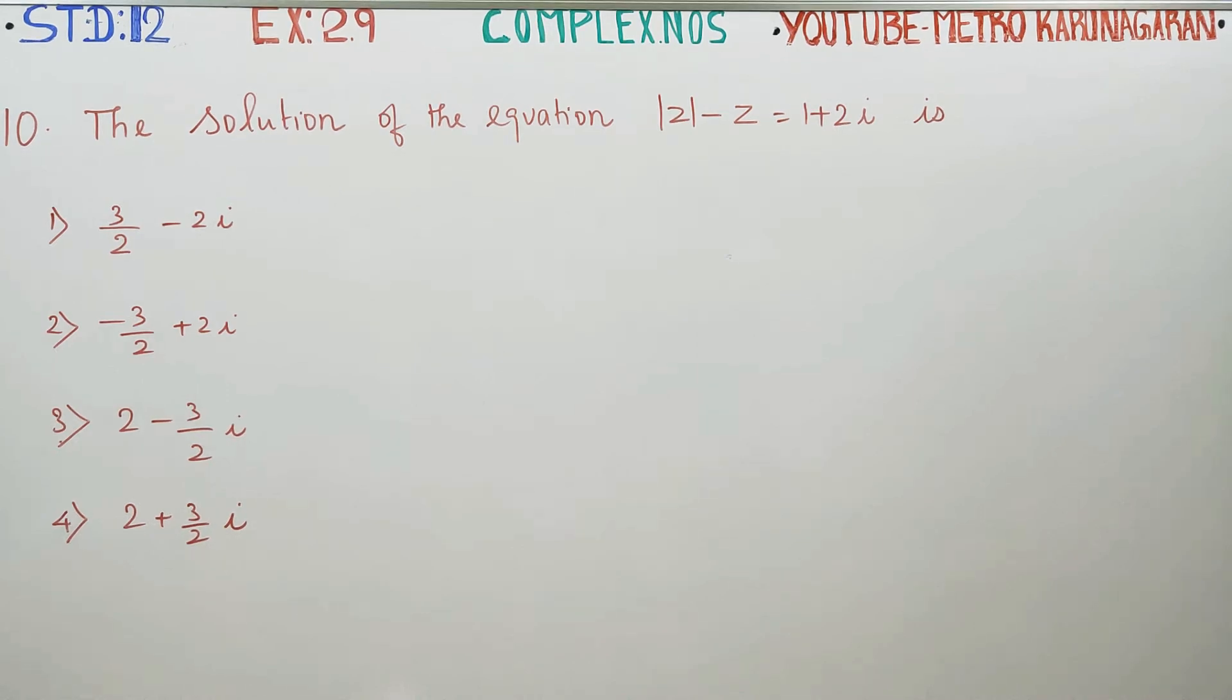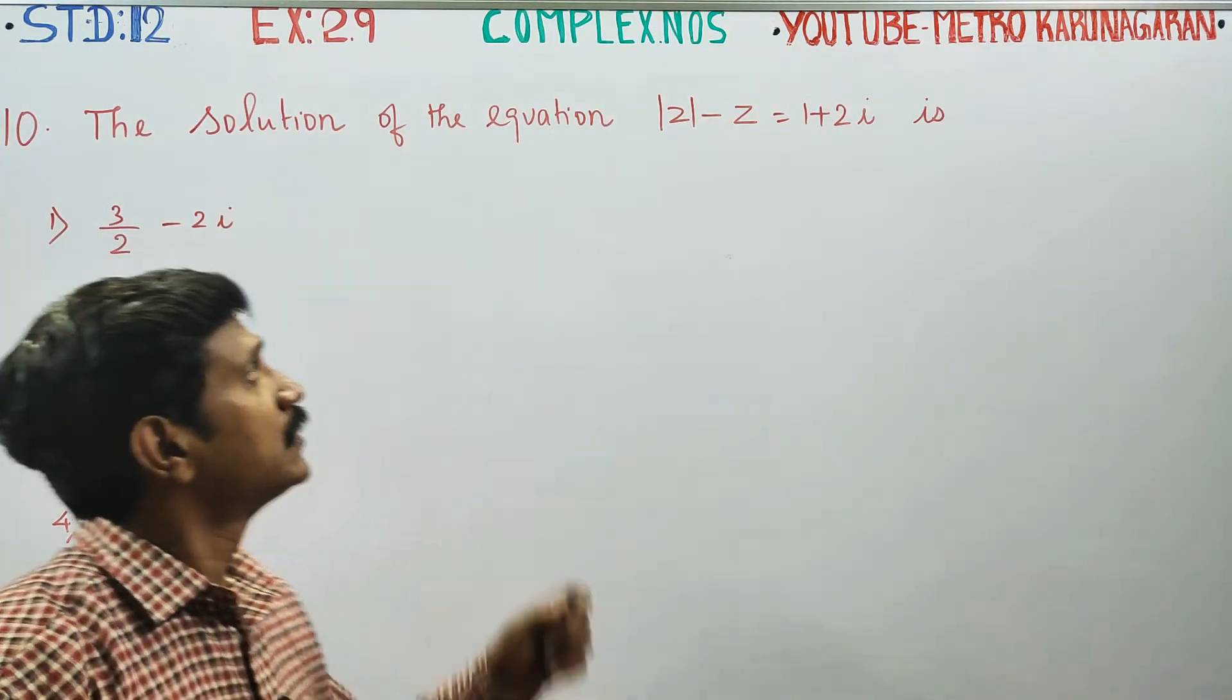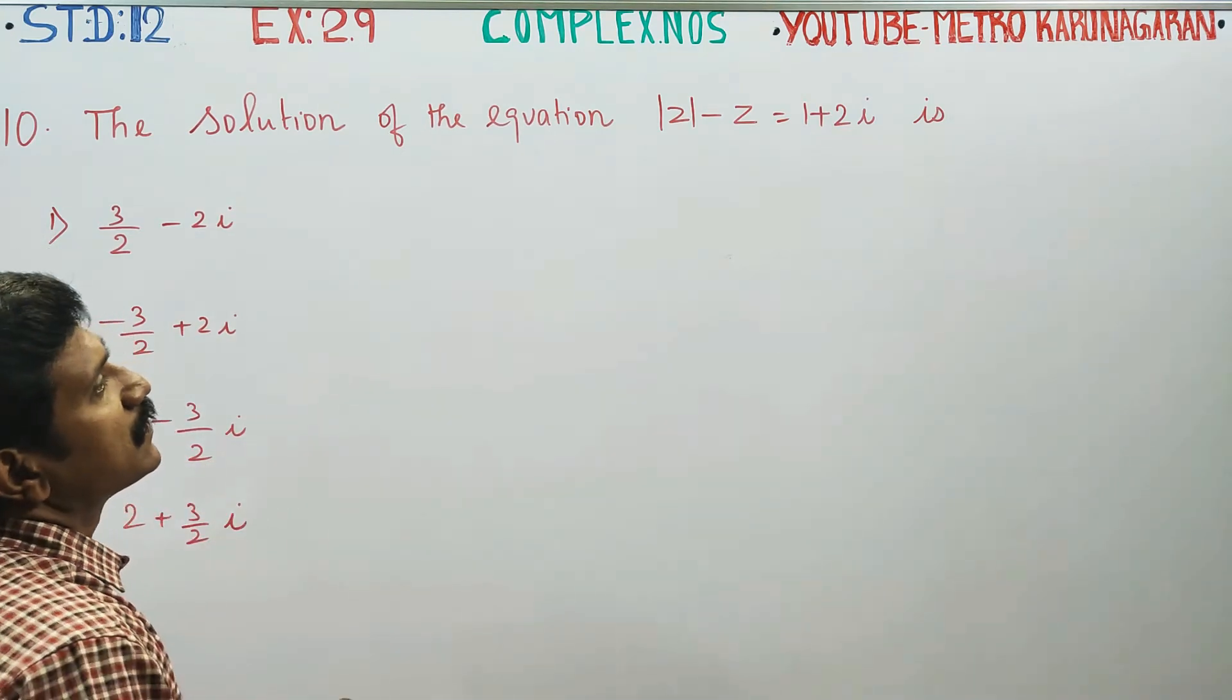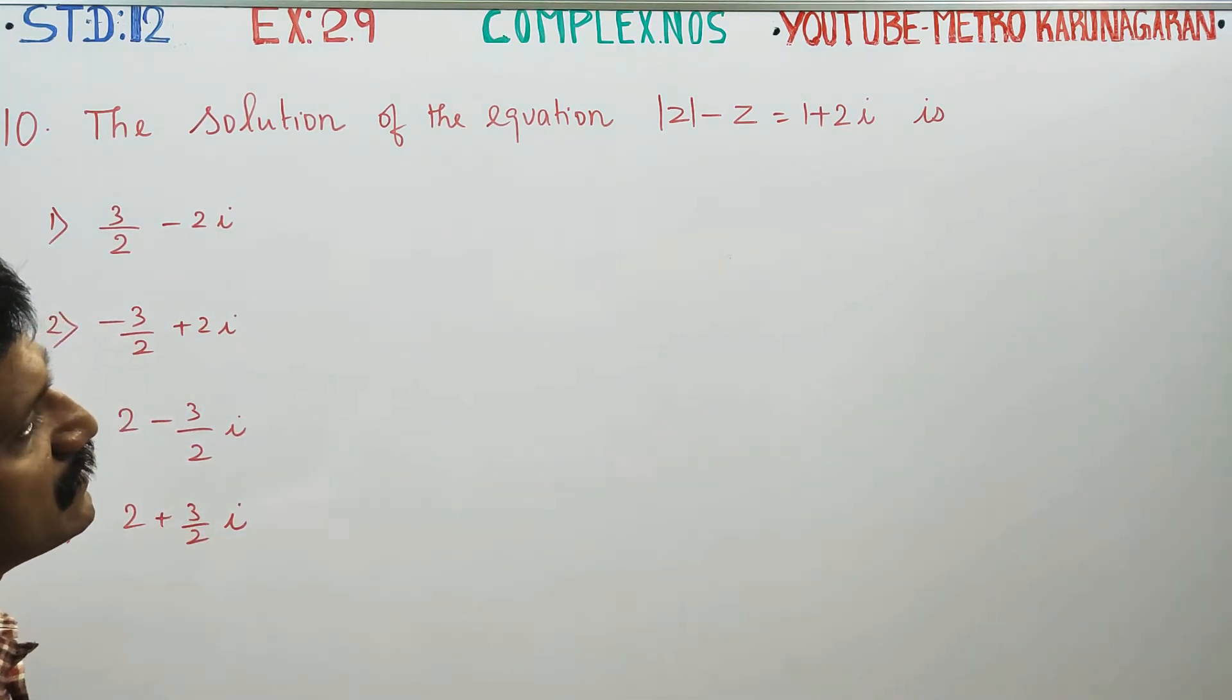Dear students, in exercise number 2.9, sum number 10, the solution of the equation modulus of z minus z is equal to 1 plus 2i is.